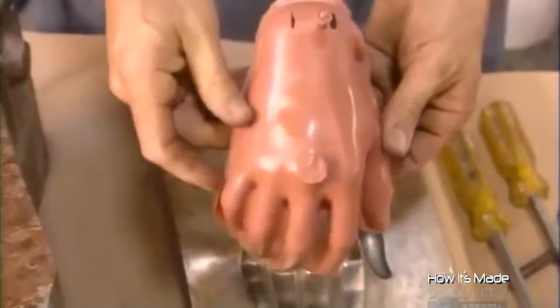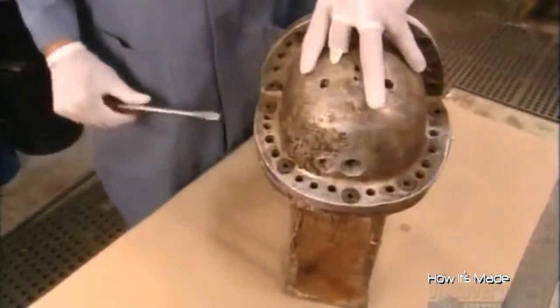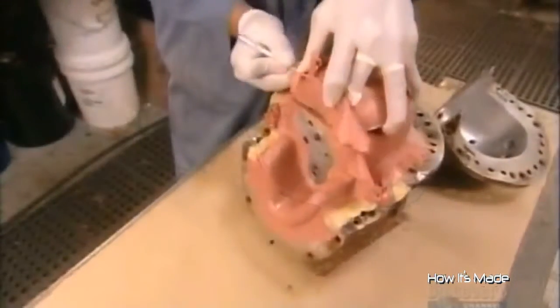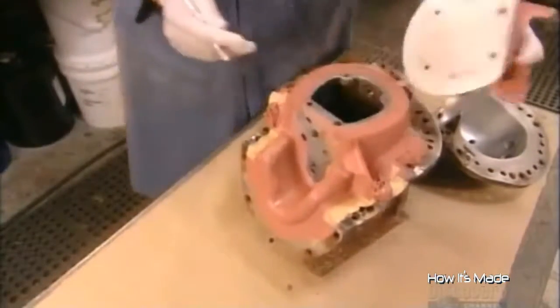This is no ordinary vinyl. It's specially designed to resemble human flesh in consistency and density. This gives researchers realistic crash data.